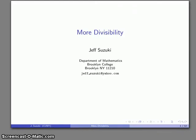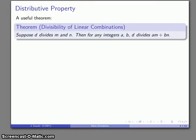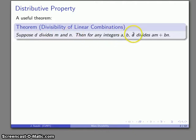Let's consider divisibility from another viewpoint. We're going to rely again on the distributive property. This is the divisibility of linear combinations: suppose D divides two other numbers M and N, then for any integers A and B, D is also going to divide the linear combination A times M plus B times N.